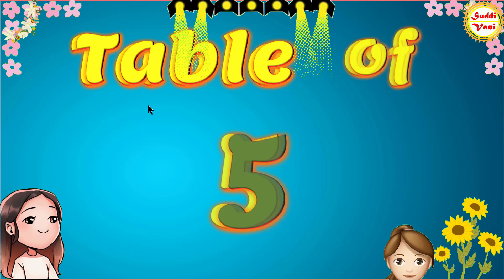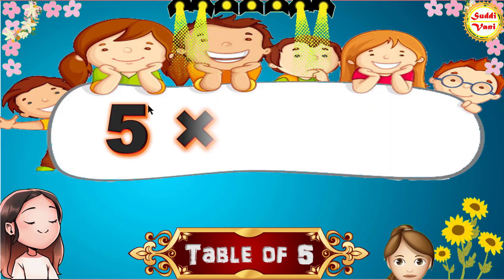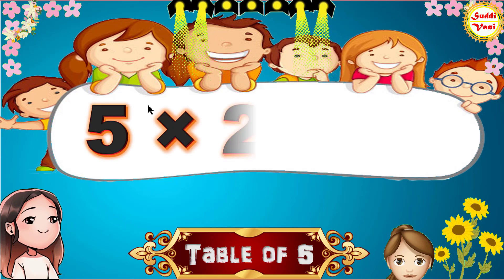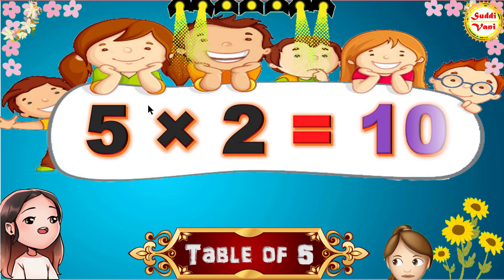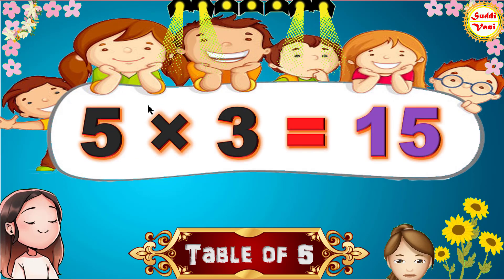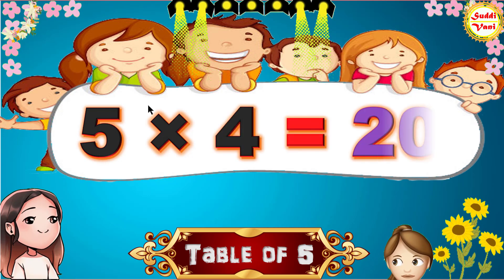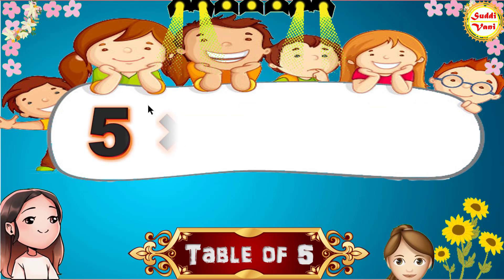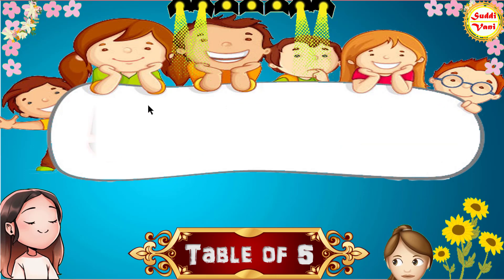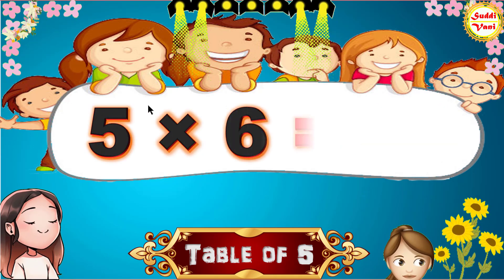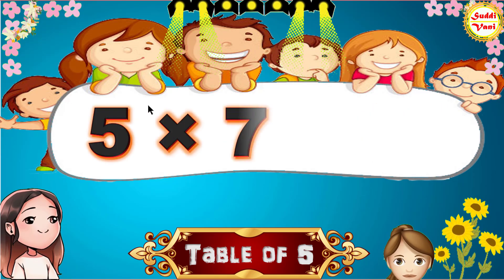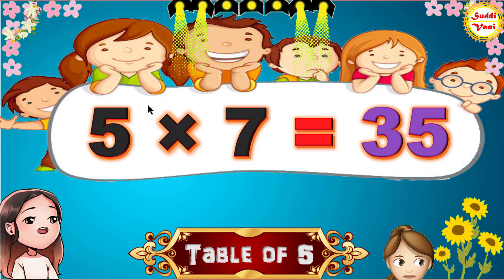Hello children, we will learn table of 5. 5 1s are 5, 5 2s are 10, 5 3s are 15, 5 4s are 20, 5 5s are 25, 5 6s are 30, 5 7s are 35.